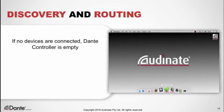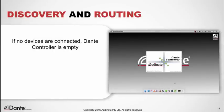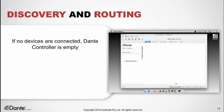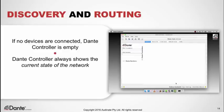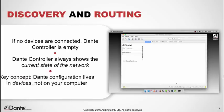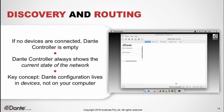When Dante Controller is launched with no devices connected, it appears empty, because Dante Controller always shows the current state of the network regardless of history. It's important to understand that the state of a Dante network — the subscriptions, labels, and settings — all reside on the Dante devices themselves. This means that all copies of Dante Controller connected to a network will all see the exact same thing.